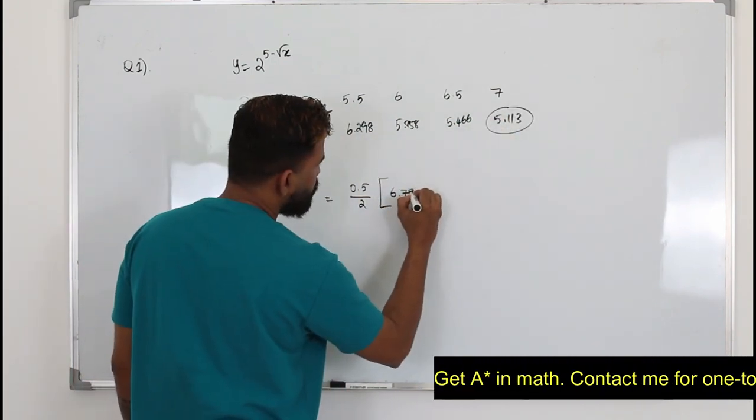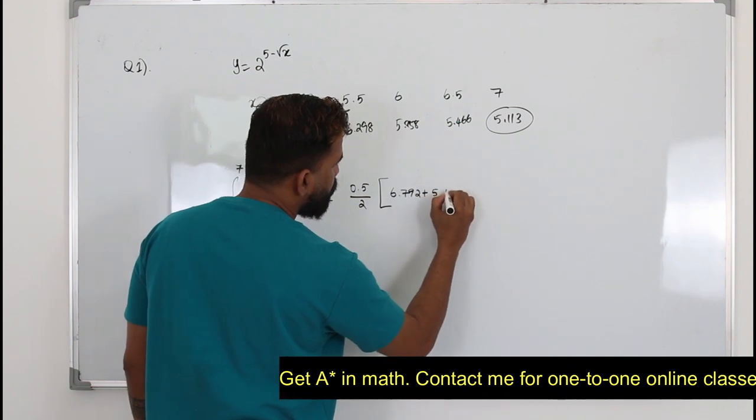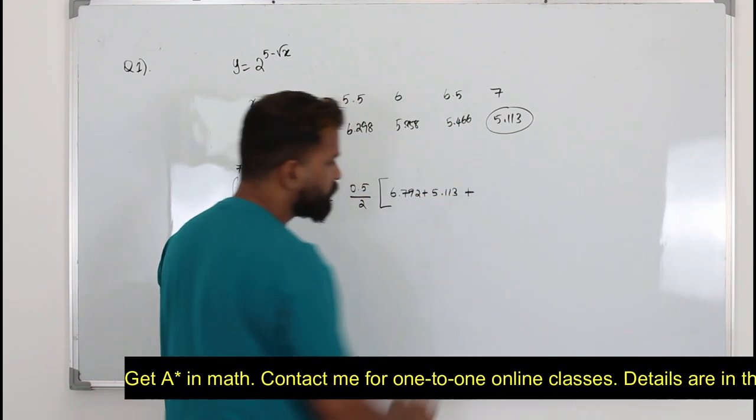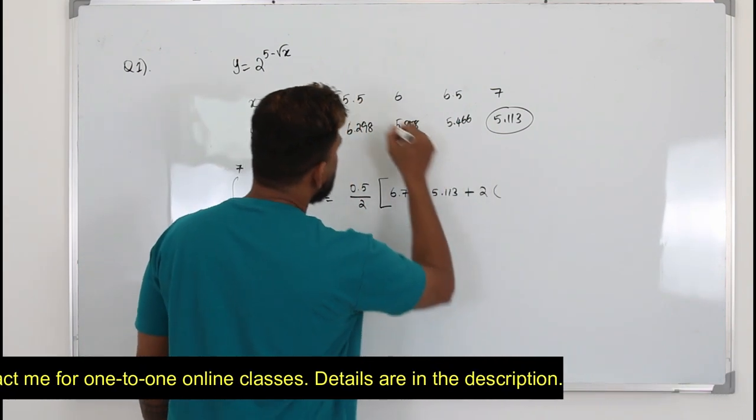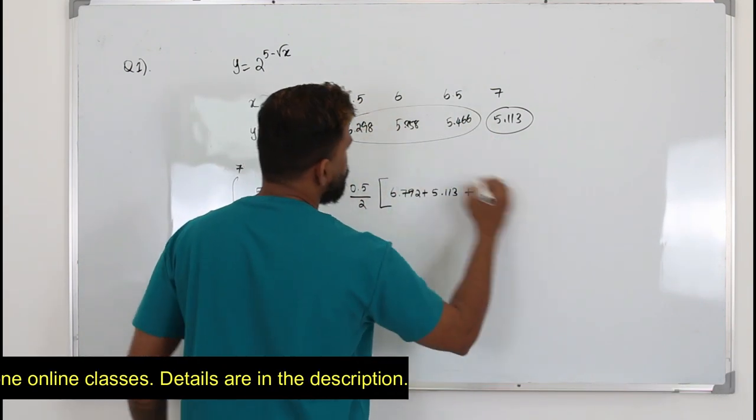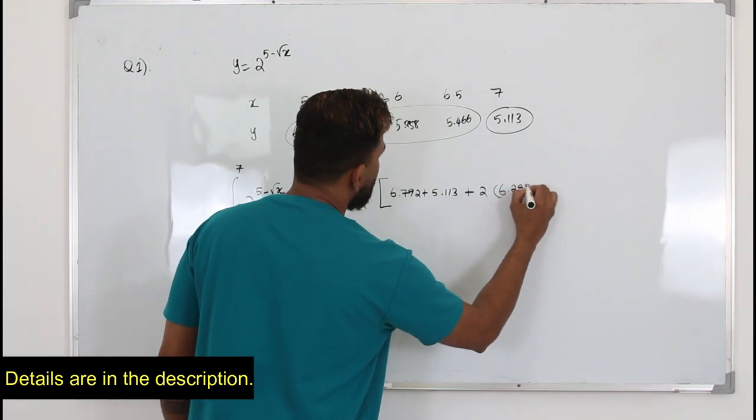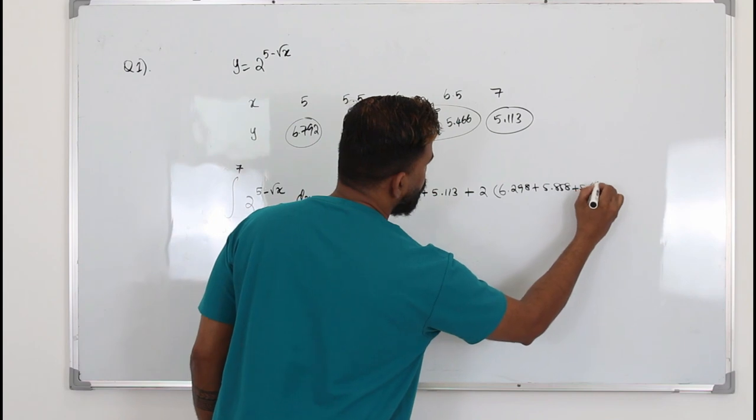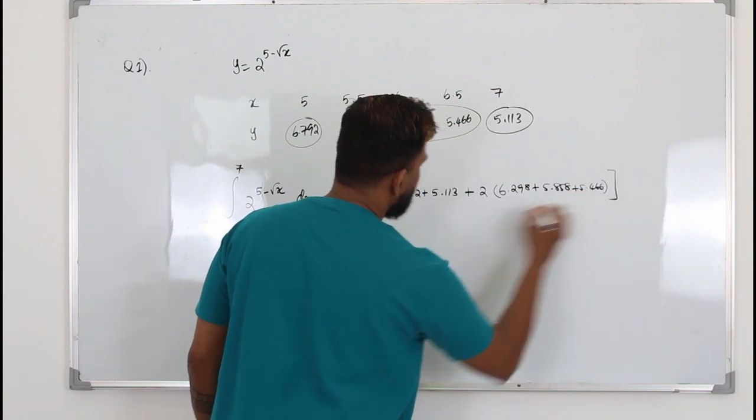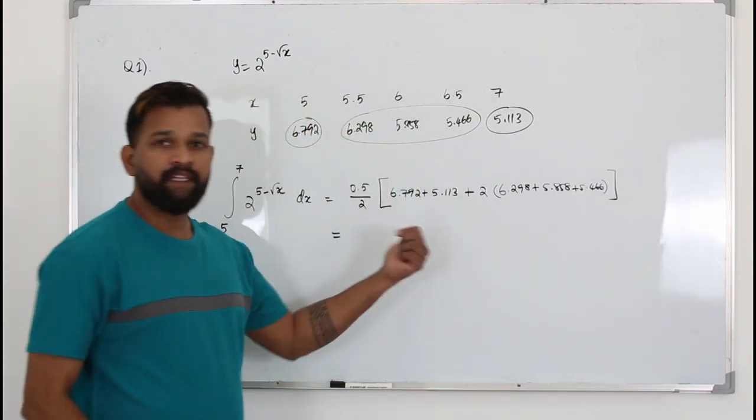6.792 plus 5.113, plus 2 times the sum of the rest of the values: 6.298, 5.858, 5.466. So that's the trapezium rule.